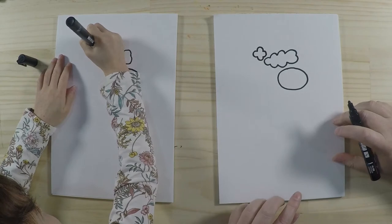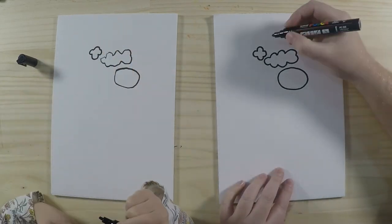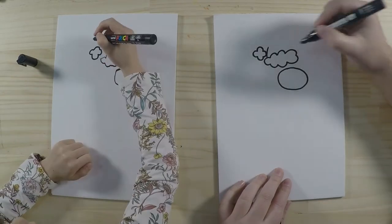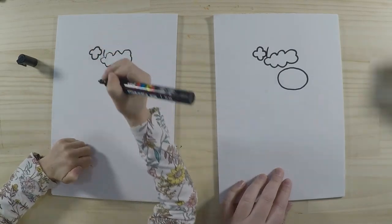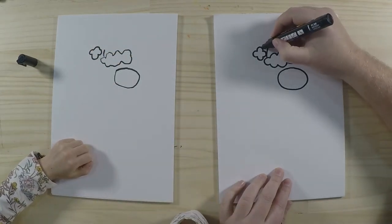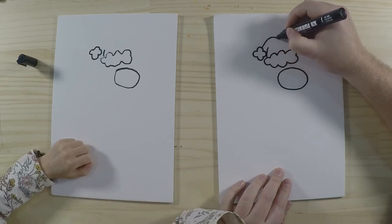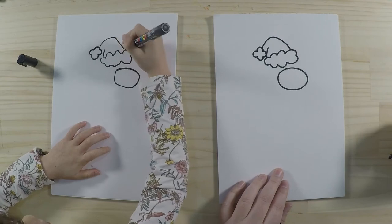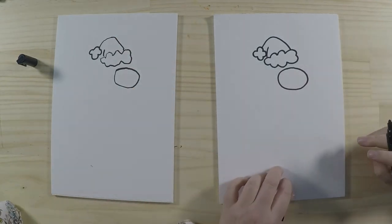Next thing we're going to draw is a line here, so it's going to be a bit of a crease in his hat. Then we're going to finish off the rest of the shape, so it's a bit of a nice curve and down like that. Great, so that's the Santa hat, and we'll color that in later.